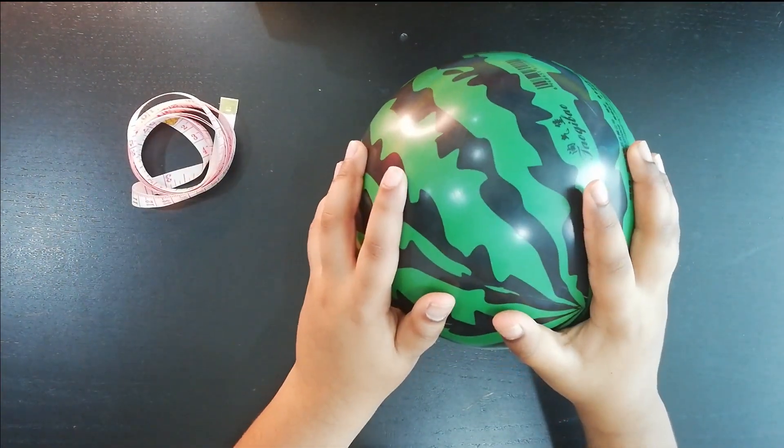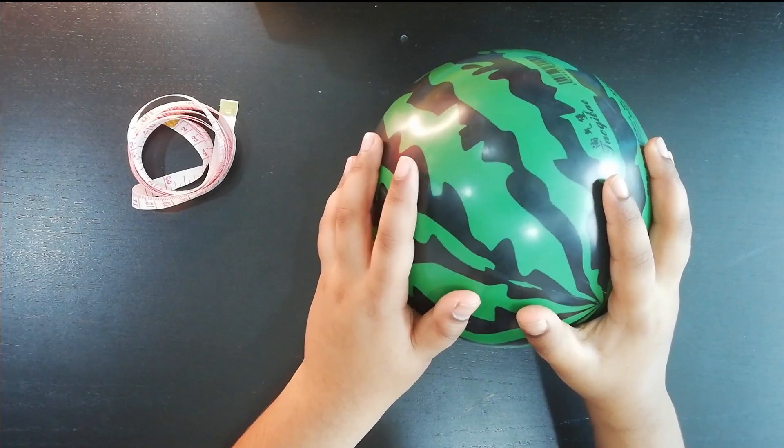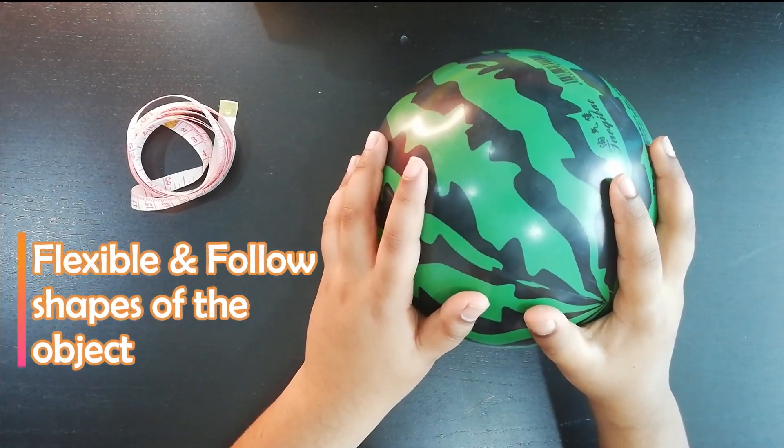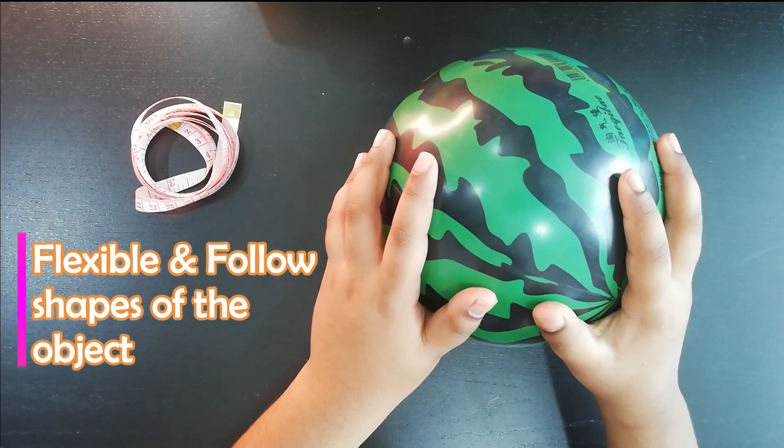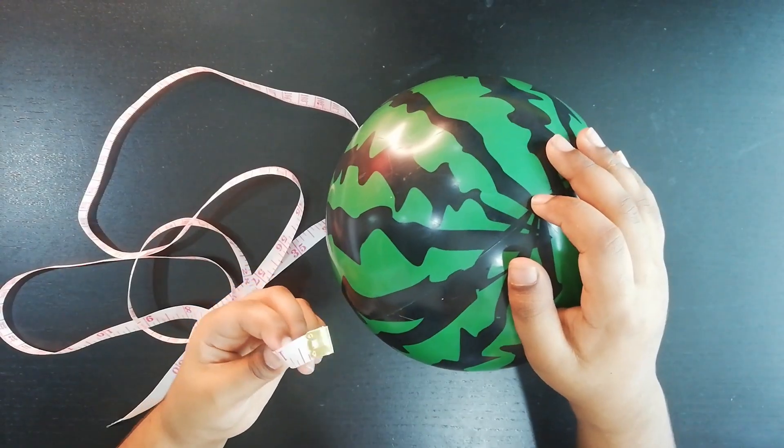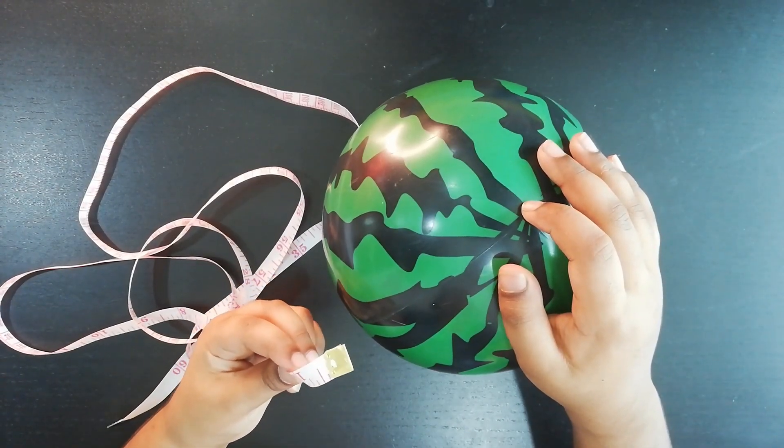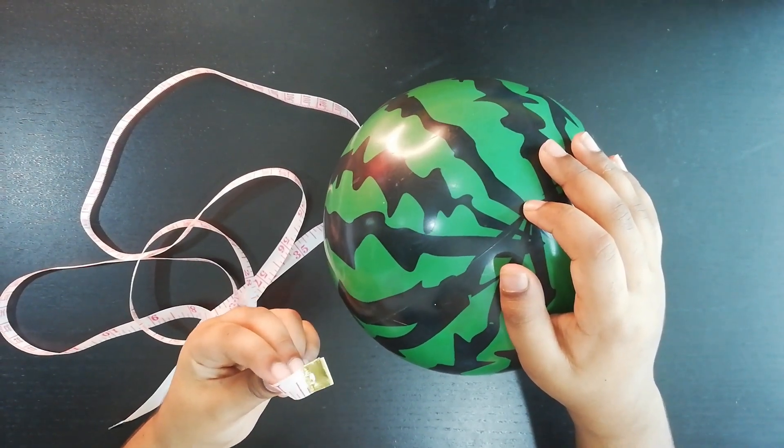This is because the ball is round in shape and a measuring tape is a flexible ruler which can follow the shape of the ball. Now I'm going to show you how to measure the ball using the measuring tape.